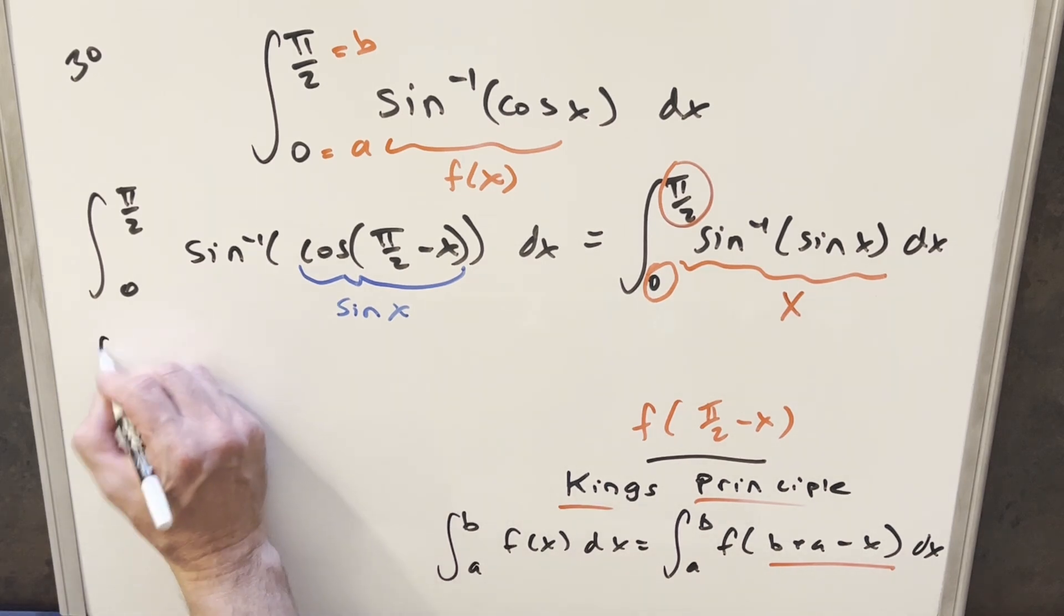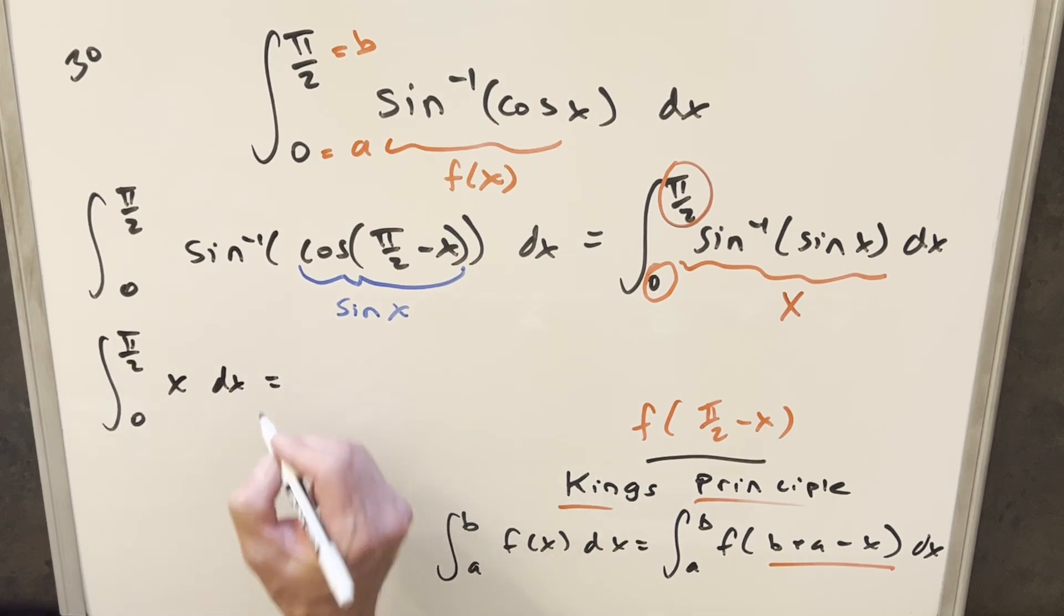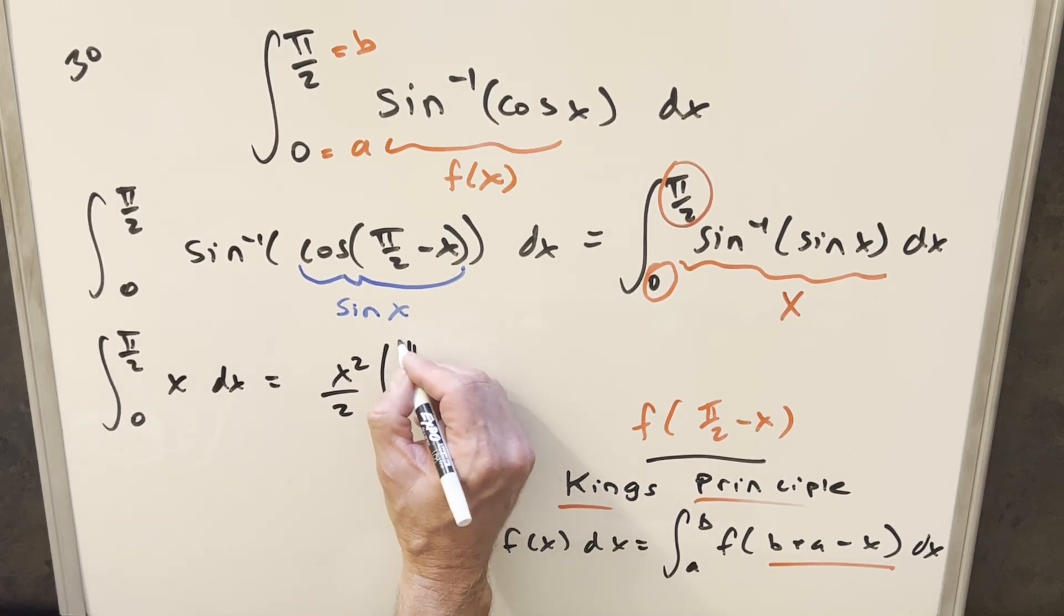So now all we need to do for this is we just need to integrate 0 to pi over 2, x dx. Power rule, we get x squared over 2 evaluated from 0 to pi over 2.